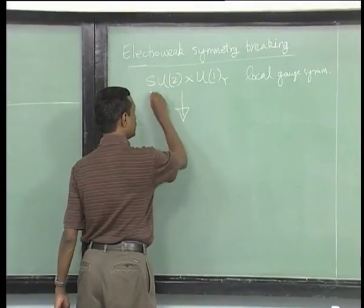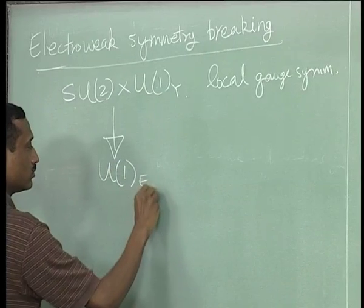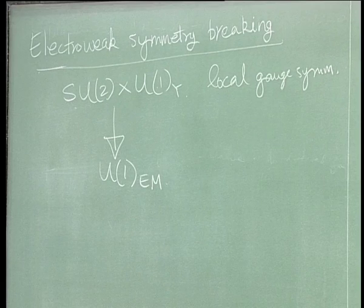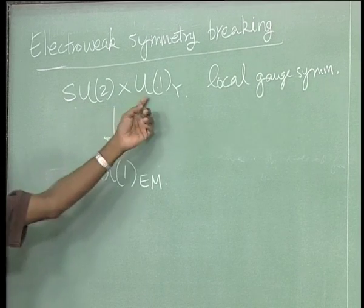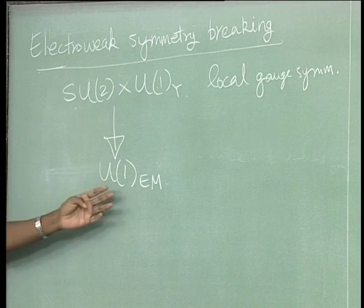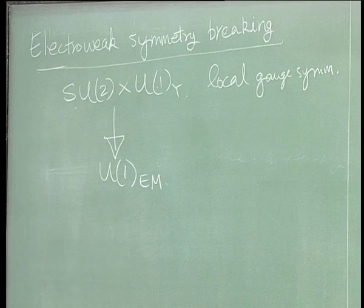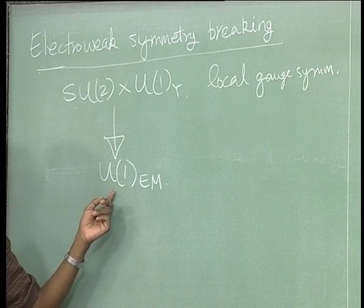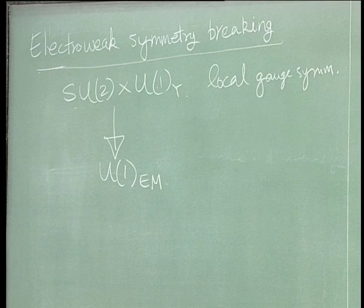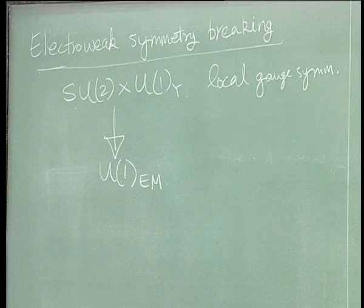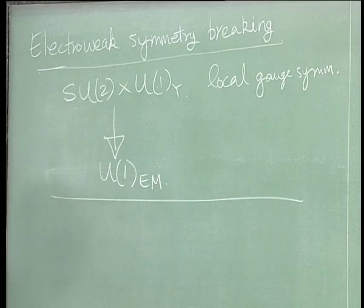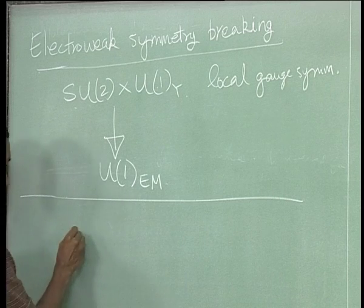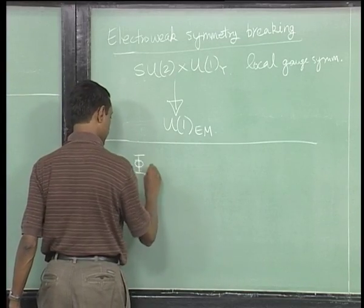The symmetry breaking mechanism is that SU(2) × U(1) is broken down to U(1)_EM. Counting: SU(3) has 8 gauge bosons; SU(2) × U(1) has 4. The Higgs mechanism will give masses to 3 of those 4, leaving one massless — and that massless combination is what we should call electromagnetism, since we know the photon has zero mass to great accuracy. We consider a complex SU(2) doublet to implement this.